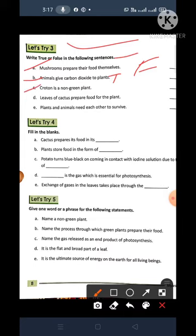Number C. Carotene Is a non-green plant. This is true. Now come to the D. Leaves of cactus prepared food for the plants. No. This is false. Stem of a cactus prepared food for the plant.